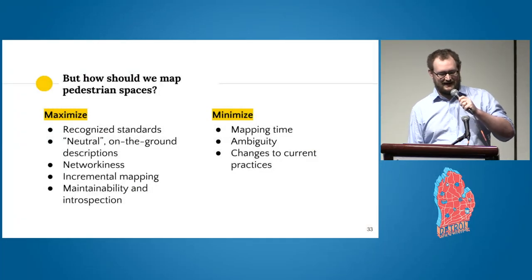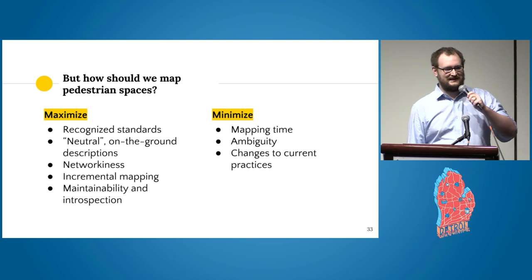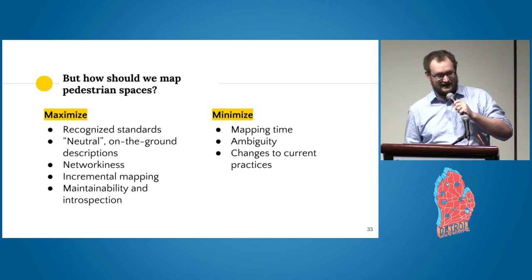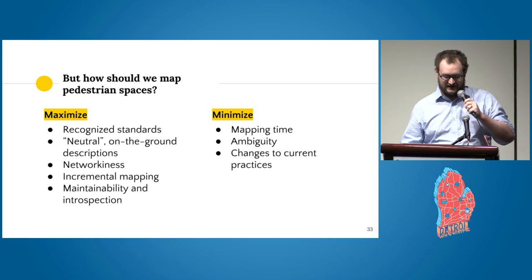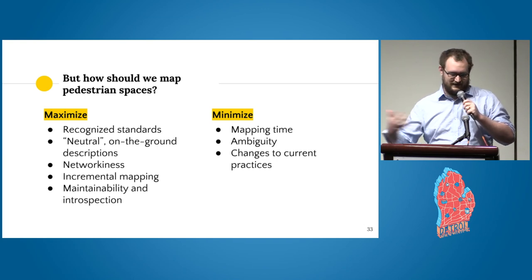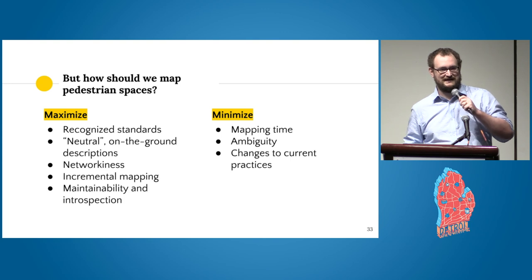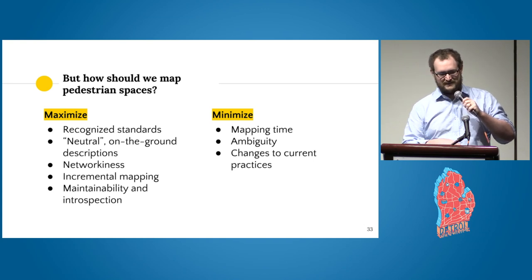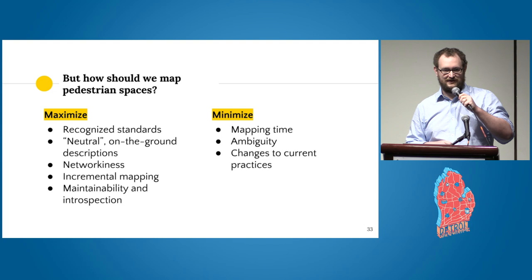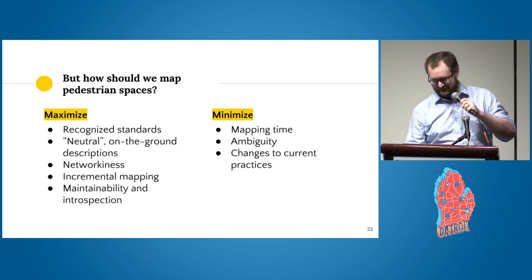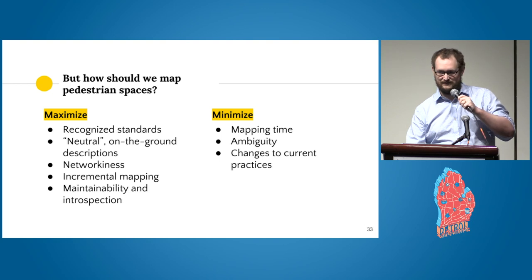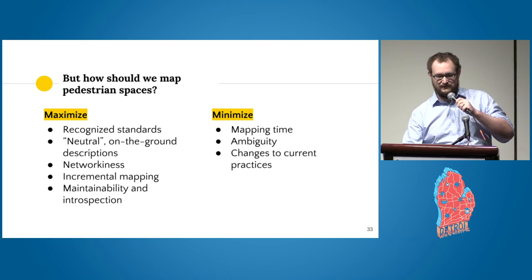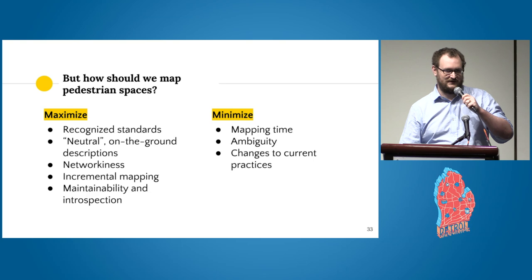The next question is: how should we map pedestrian spaces? We want to maximize standards so we can communicate what we're talking about, neutral on-the-ground descriptions as per OSM standards, and networky data — that's probably the biggest issue — so we know if you're going to encounter something as you travel around the pedestrian network. We want mapping solutions to be incremental so you don't have to add 20 different tags all at once. We want it to be maintainable and introspectable, quick to map, not super ambiguous, and we want to avoid changing the entirety of OSM to accomplish this.